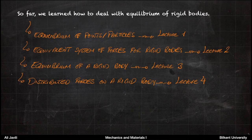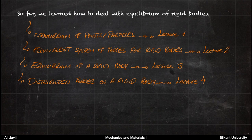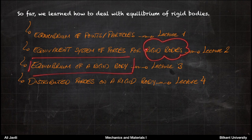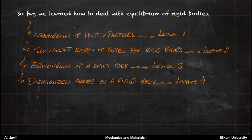So far what we have done is that we have dealt with the equilibrium of rigid bodies. In the first lecture we dealt with the equilibrium of points and particles. In the second lecture we talked about equivalent systems of forces and learned how to transform forces and moments on a rigid body to a point, and then using that we learned how to impose equilibrium of a rigid body. We also learned how to handle distributed forces on rigid bodies — that was lecture 4.